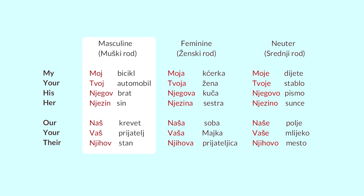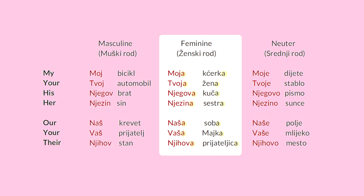The general rule is that masculine words end with consonants. Feminine words end with A. The specific adjective — like my, your, his, her — changes accordingly. They will always agree with the noun.